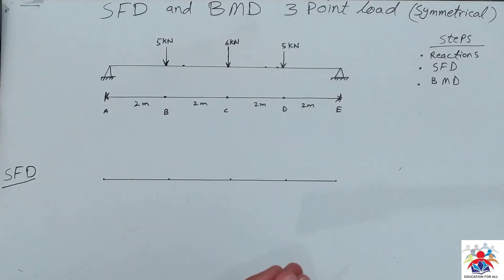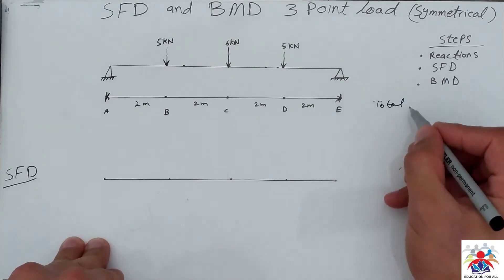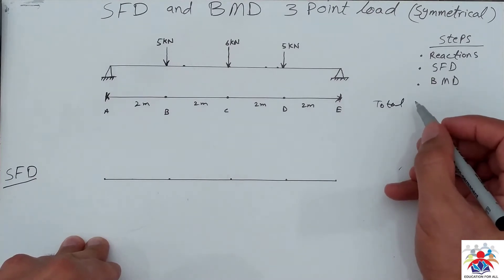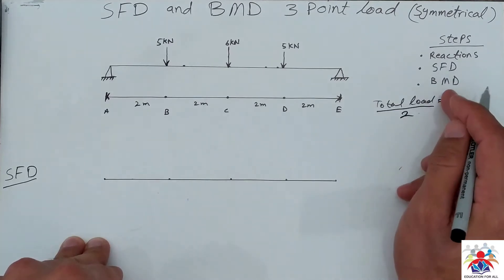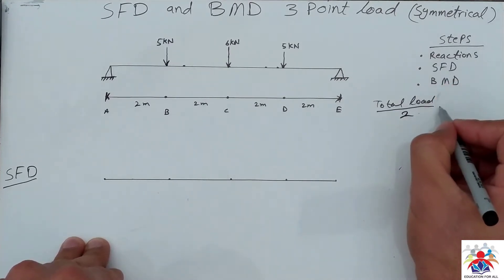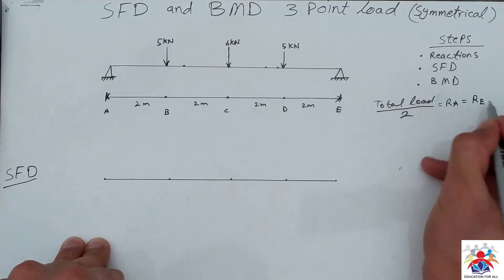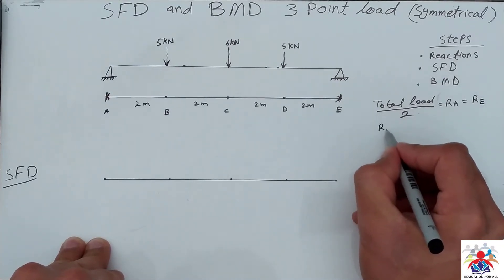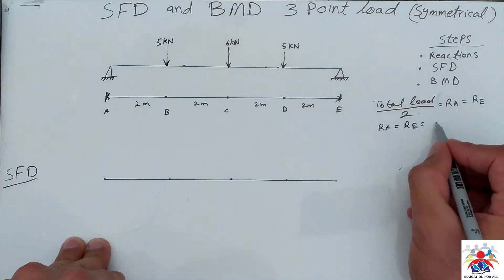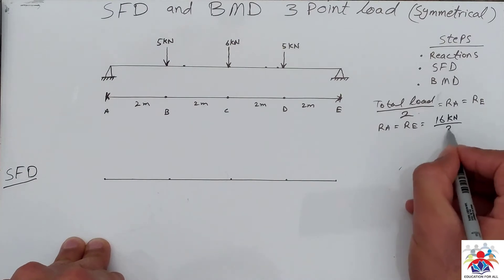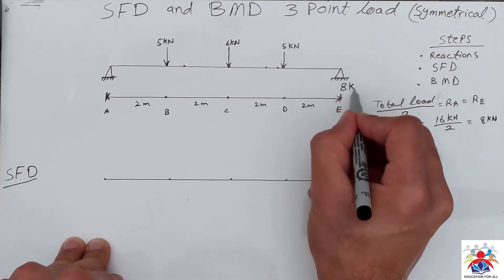When we have a symmetrical beam, calculating reactions is easy. The formula is: total load divided by two equals the reaction. So RA equals RE. The total load is 16 kilonewtons divided by two, which equals 8 kilonewtons. So at RE we have 8 kilonewtons.